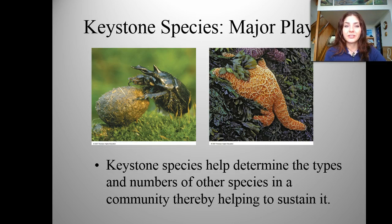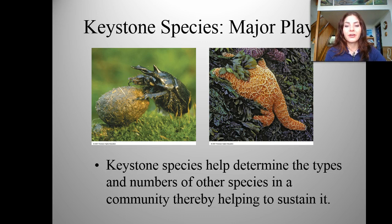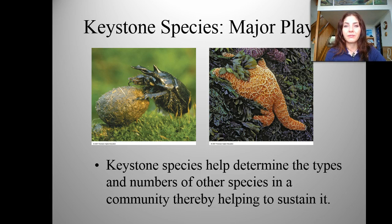The next term we're going to discuss is called a keystone species. This is the major player when we're talking about food chains, food webs, and ecosystems. A keystone species helps determine the types and numbers of other species in a community, thereby helping to sustain it. If something happens to a keystone species, you're going to see a drastic effect on all of the other organisms in that food web within that ecosystem.